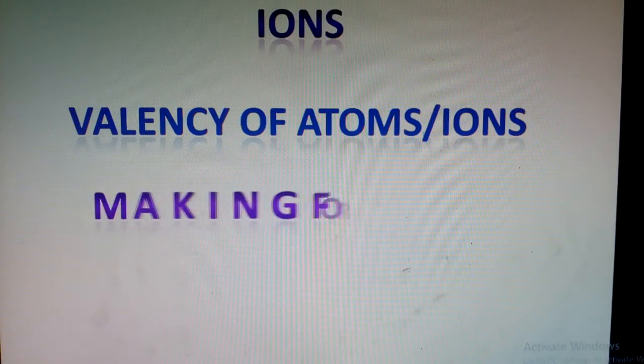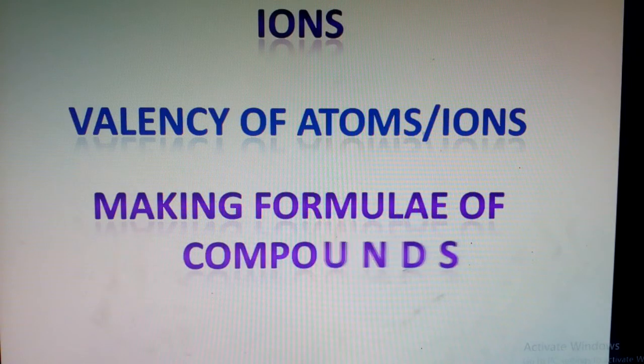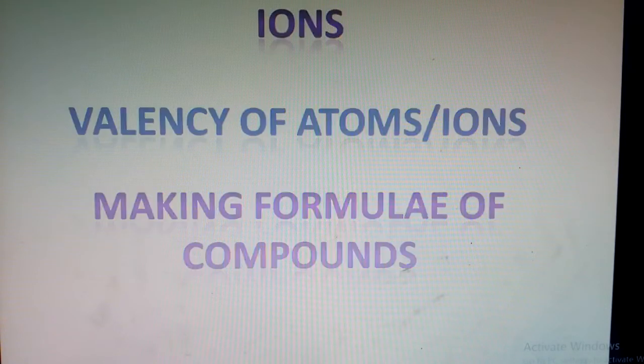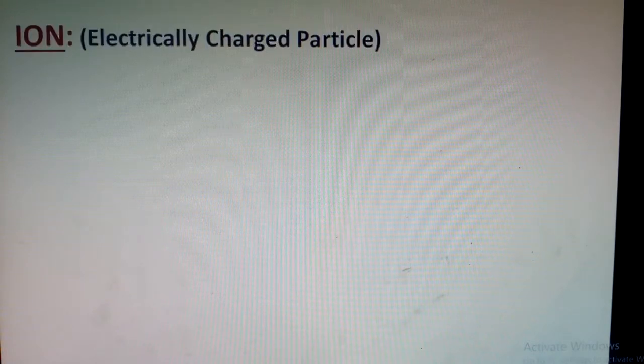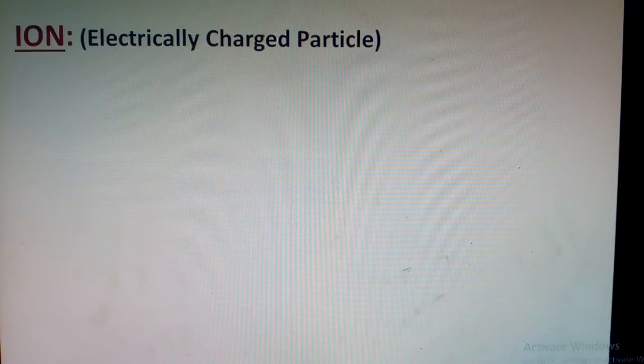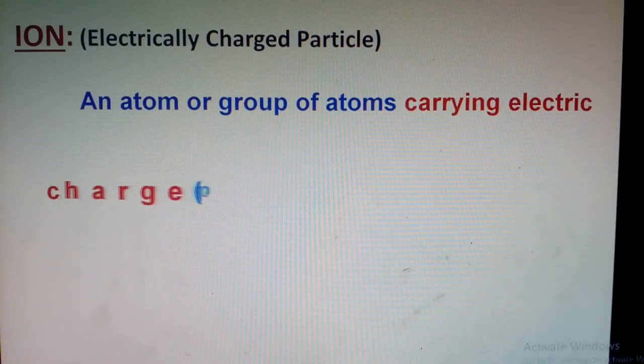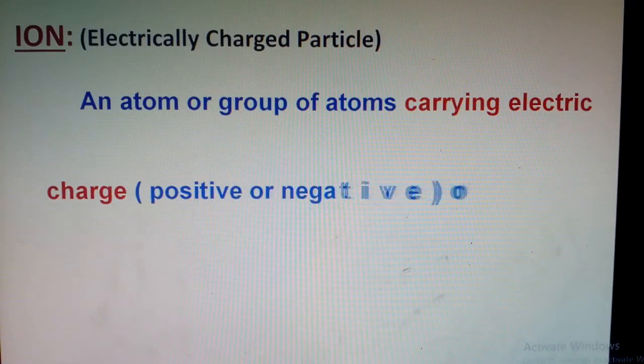What is an ion? An ion is an electrically charged particle. It can be an atom or group of atoms that carry electric charge, which may be positive or negative in nature.